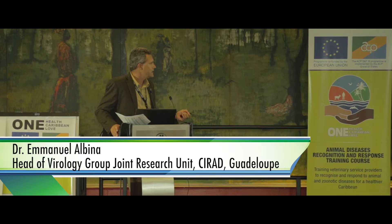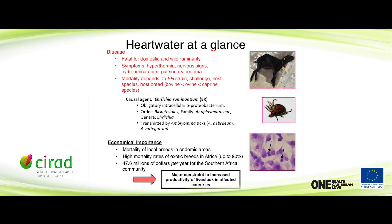Heartwater is a very important and fatal disease for domestic and wild ruminants. The main symptoms are hypothermia, nervous signs, hydropericardium, and pulmonary edema. Mortality depends on the strain, but can be very high with some strains, especially in certain breeds. Generally bovine are less susceptible than ovine. The pathogen is Ehrlichia ruminantium, belonging to the order Rickettsiales and family Anaplasmataceae, genus Ehrlichia — an obligatory intracellular bacterium.